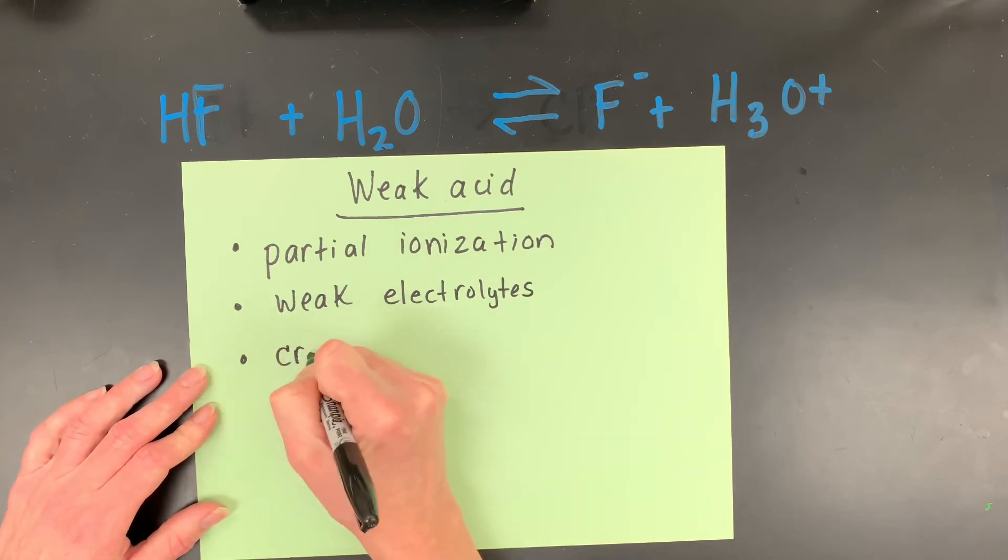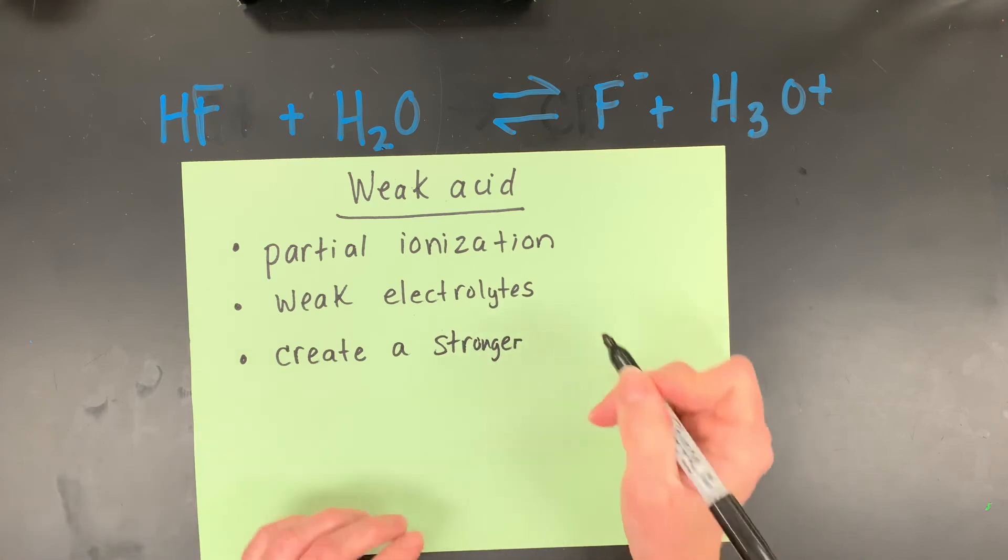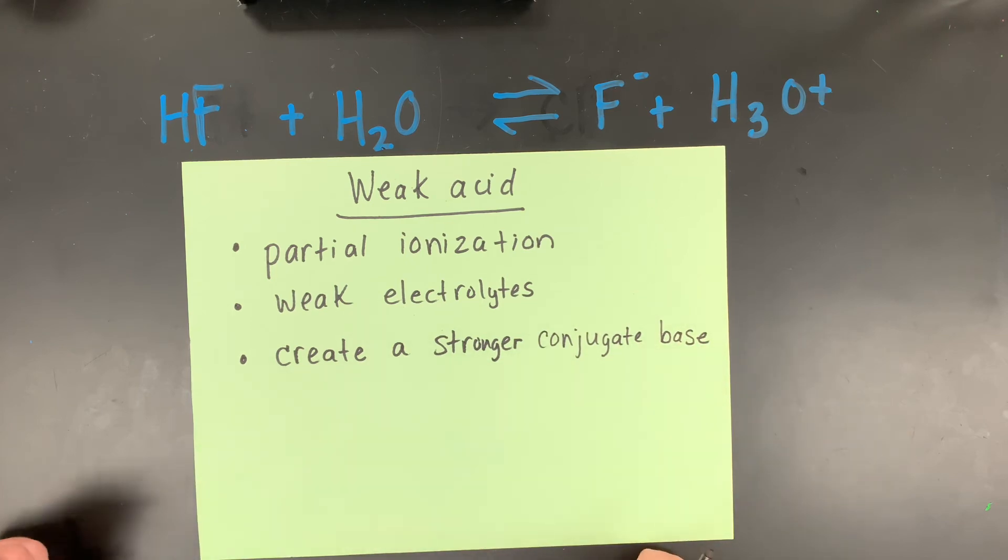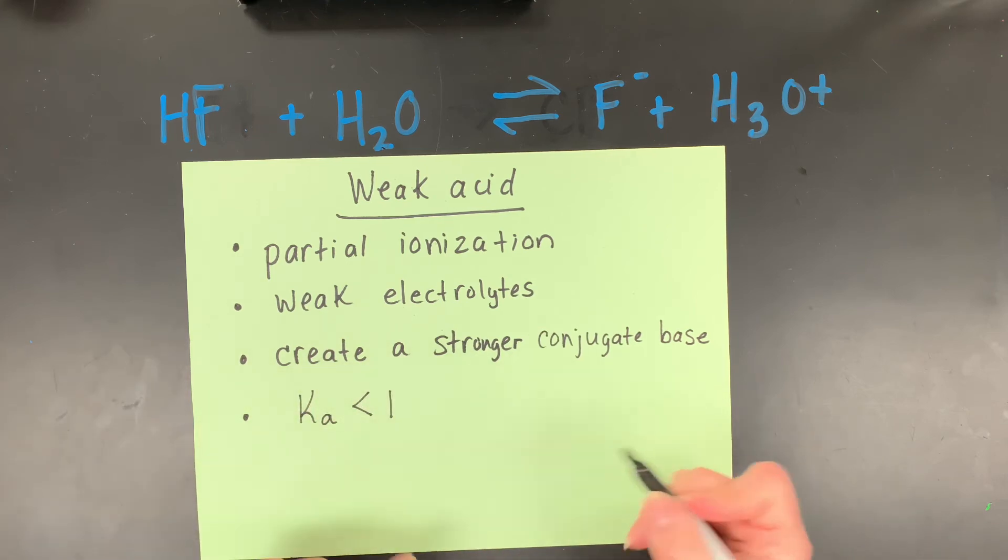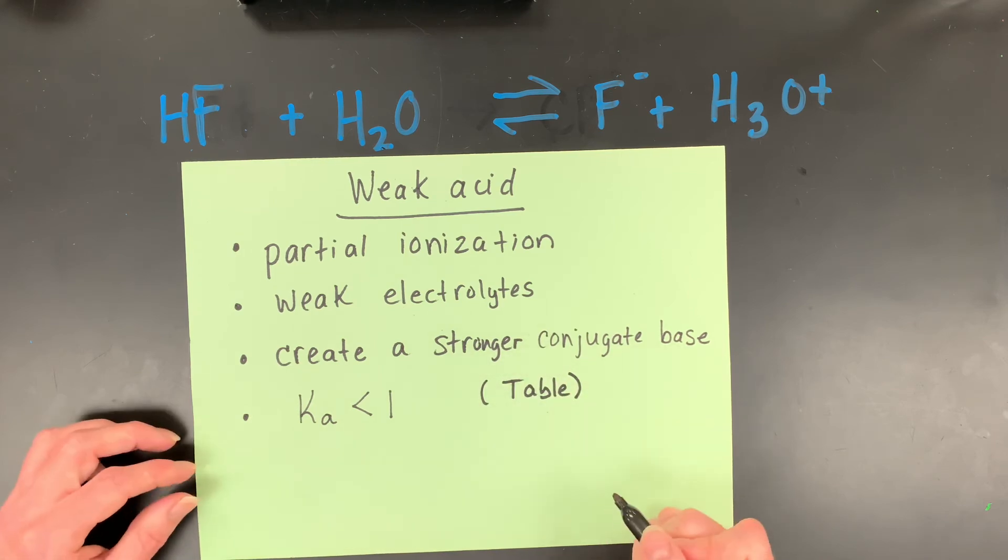They create kind of the, everything's kind of the opposite. They create a kind of a stronger, I don't want to say strong, but stronger conjugate base. And again, if you haven't watched the video on my conjugate acid-base pairs, that would help. And they have Ka values, and they are less than 1. And typically, you're going to find a table in your book that's going to list the Ka values for your weak acids.